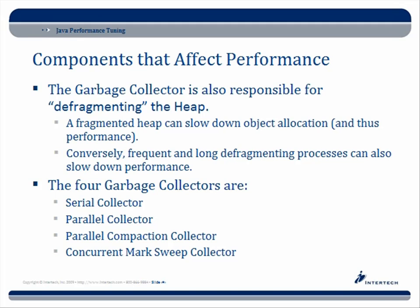If everything is defragmented and compacted together, the JVM knows right away where to put a new object, which is faster. A fragmented heap slows down object allocation and thus performance, but frequent defragmenting processes can also slow down performance — there are trade-offs throughout.